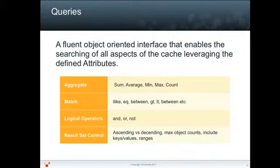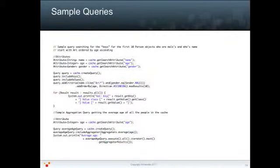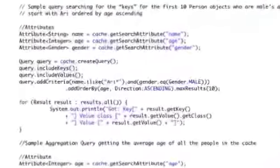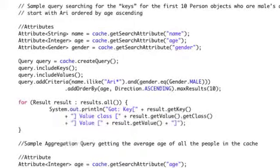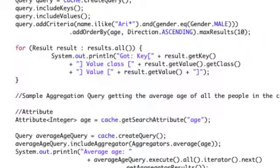It also lets you do various kinds of matching — exact, by pattern, and ranges — as well as logical operations, and control your result sets via operations like order by and max object count. Here are some example queries. Here we get the attributes we defined earlier during the cache creation, next we build up a query using the eHcache query API, then we execute the query and iterate through its result set.